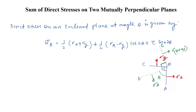Now consider one more plane inclined at angle theta from AB — this is the BD plane — and the direct stress on this plane is sigma theta. Perpendicular to BD there is another plane, BE, and the direct stress on this plane is sigma theta plus 90 degrees.